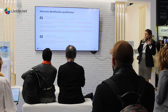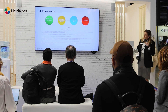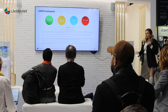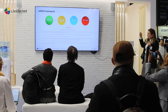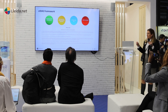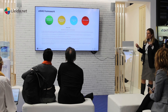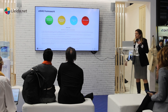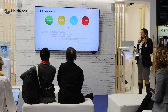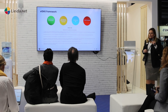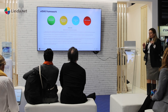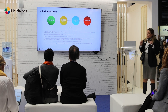If we go deeper into the EIDAS framework, we have the regulation, which is the first step. Below that, we have the implementing regulation, which defines the three levels of assurance already mentioned, then ETSI 401, which is for general management, and ETSI 461, which is specific for the identity proofing procedure.